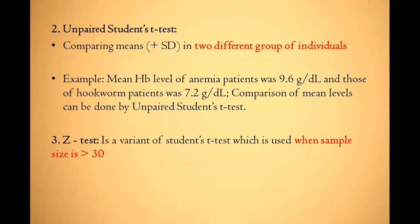Next is the unpaired Student's t-test. The unpaired t-test compares the mean in two different groups of individuals. For example, if the hemoglobin level of anemic patients versus hookworm patients is given, the comparison of mean levels can be done by unpaired Student's t-test. Next is the z-test, which is a variant of the Student's t-test and is done when the sample size is more than 30.